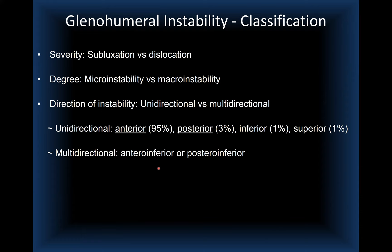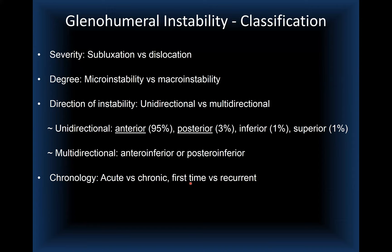Chronology is another important factor: acute versus chronic instability, and first-time dislocation versus recurrent subluxation or dislocation each present with different imaging findings. The etiology can be traumatic or atraumatic, and there are several clinical categories.